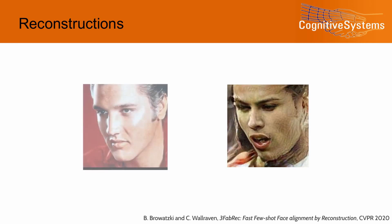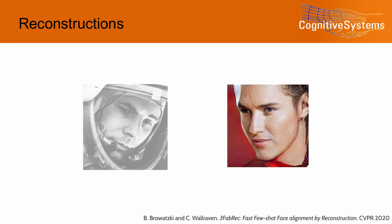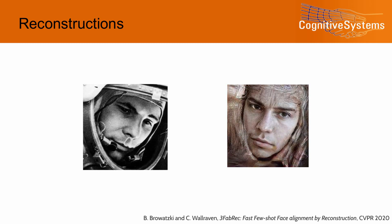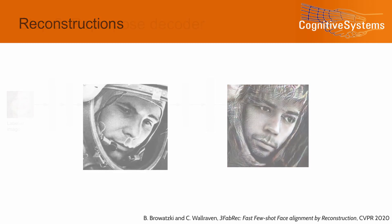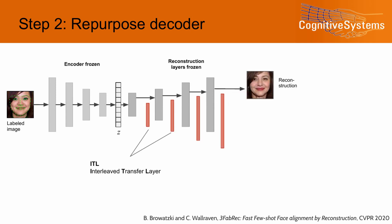So far, our model has learned to implicitly encode and decode facial structural information. In the next following step, our goal is now to make this knowledge accessible. For this, we retask the decoding pipeline to not just generate an RGB color image, but in the same process also to produce a set of heat maps corresponding to likelihoods of key point locations.